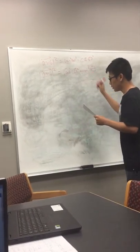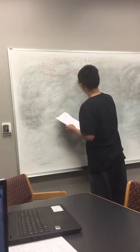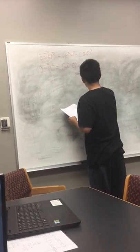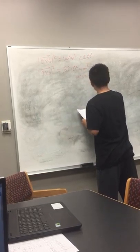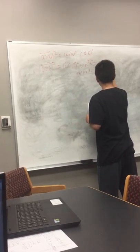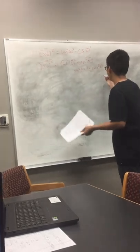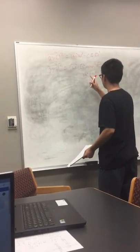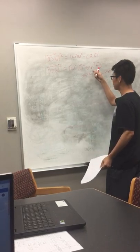So sine squared theta has a property where it's equal to one minus cosine squared theta, because you have the Pythagorean theorem. So we have that right there. We can substitute